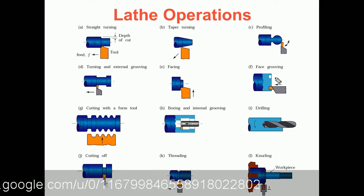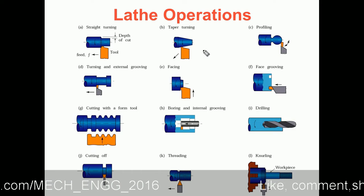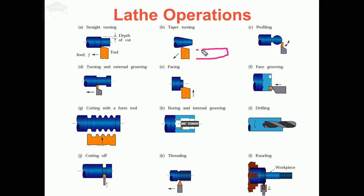Next comes face grooving. Suppose you put the tool in the side view of the workpiece — consider a cylinder where the front view is flat and the side view is circular. We put the tool here and give feed, and these types of grooves are generated. When we look from the front view we can see the grooves generated, and that is known as face grooving.